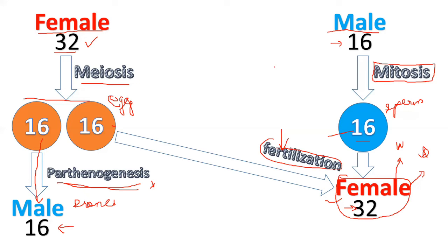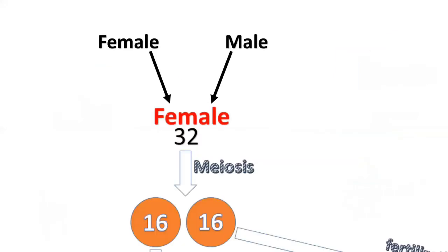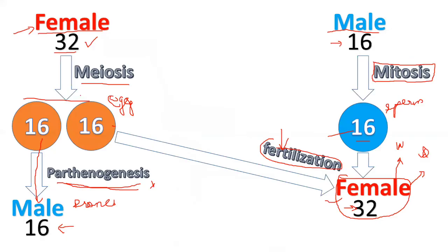Males don't have sons — they have grandsons — and they have grandfathers, not fathers. Now observe: let me take you to the next slide. This female is formed by the combination of sperm from a male and an egg from a female, because a female is formed through fertilization. So a female and a male — their gametes fuse — resulting in a female offspring. Now this female is going to give birth to another male, and this female has a father and a mother.